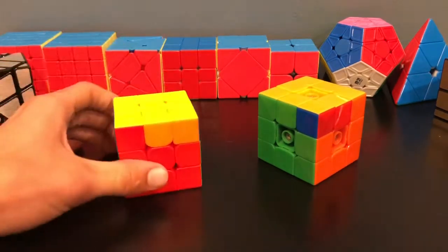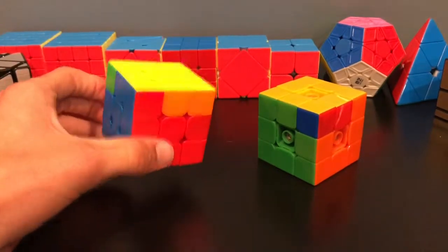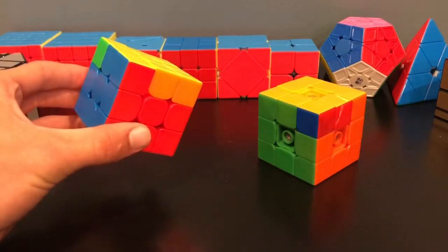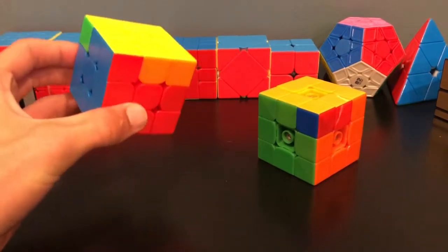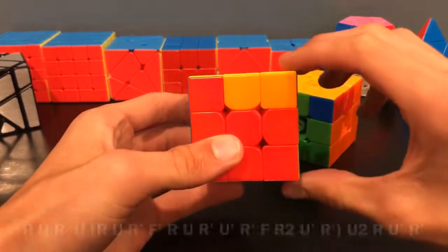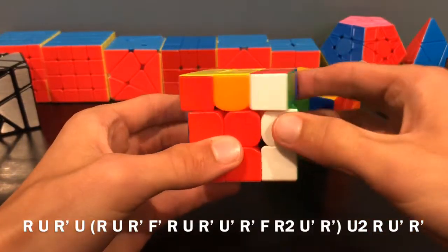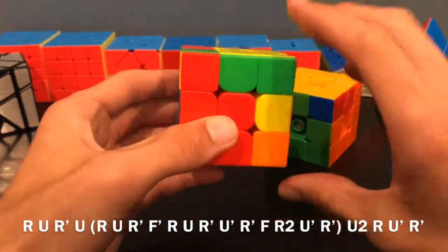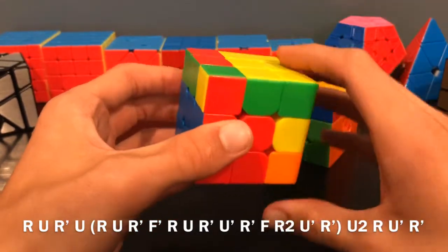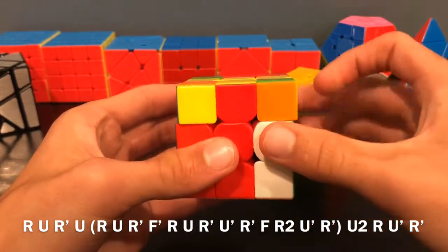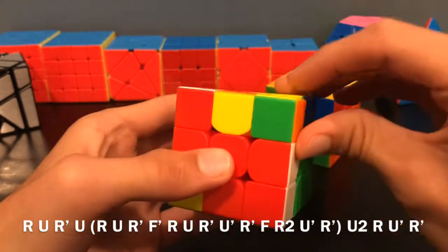For Na, most of it is like Jb perm, so if you haven't learned Jb perm yet, I definitely would suggest learning that first. Here's the algorithm: R U R prime U, and then you're essentially going to do a Jb perm. R U R prime F prime R U R prime U prime R prime F R R2 U prime R prime.